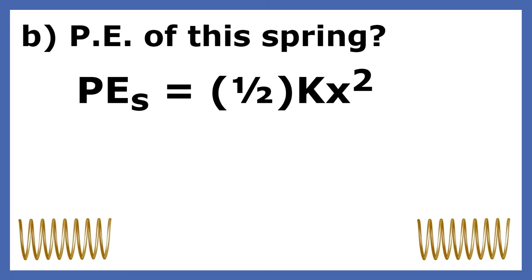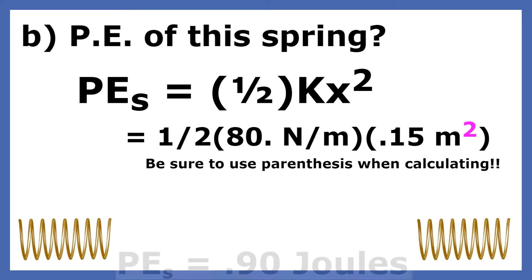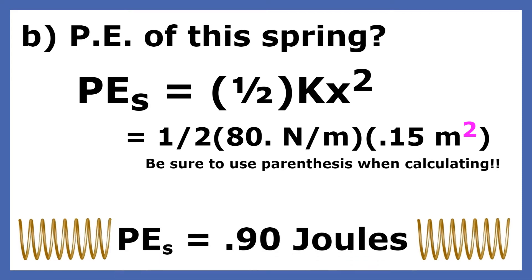What is the potential energy of the spring in this problem? PE equals 1 half kx squared. When we substitute the spring constant we just calculated and the stretch given in the problem, we get 90 joules of potential energy.